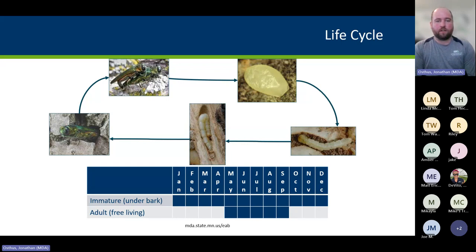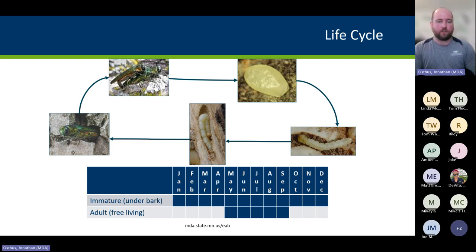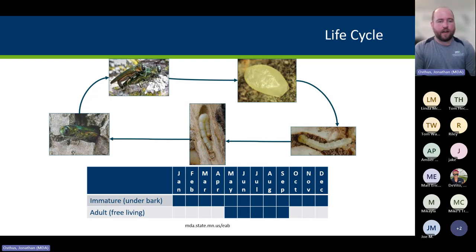Once those eggs are laid, within a week or two they will hatch. The small larvae burrow through the bark and begin tunneling in the cambium layer of the tree — this is where the insect does the damage, disrupting the transfer of nutrients between the root system and the crown. The larvae go through four larval instar stages, growing larger before chewing a pupal chamber either about a quarter inch into the sapwood or, in large mature trees with thick bark, into the bark as well. The larva folds over, ready to pupate the next spring and summer and turn into an adult.